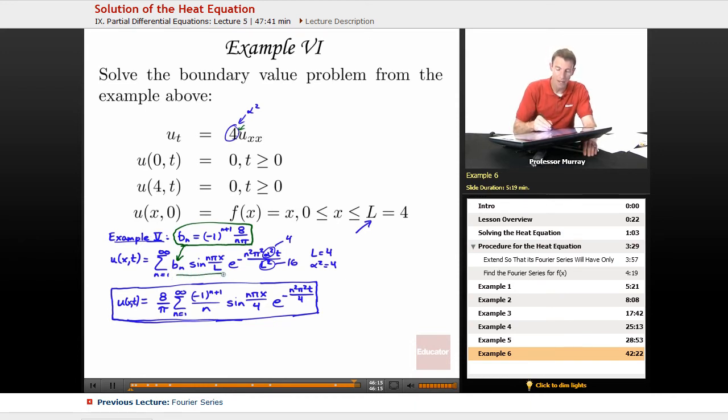bn sine of n pi x over l, e to the negative n squared pi squared alpha squared t over l squared. Our l is 4. We get that from the problem here. So we get 16 in the denominator there. Alpha squared is 4.